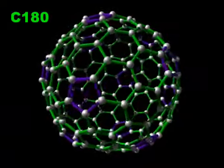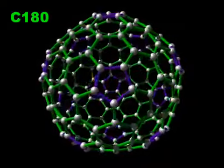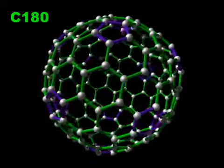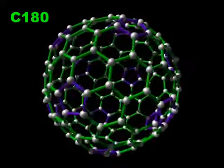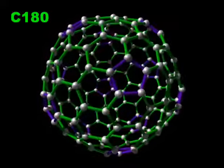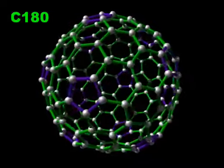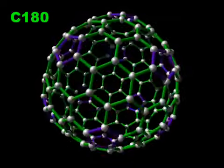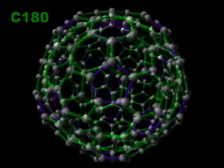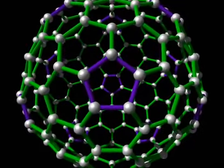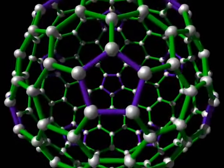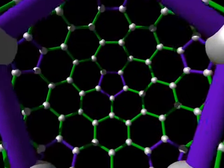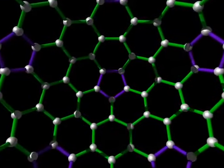Many other fullerenes are known. The next most common example is C70, which is a stretched C60 molecule. Other examples include C180 and C240, both of which are spherical. All of the higher fullerenes contain the same twelve five-membered rings, but differing numbers of six-membered rings.